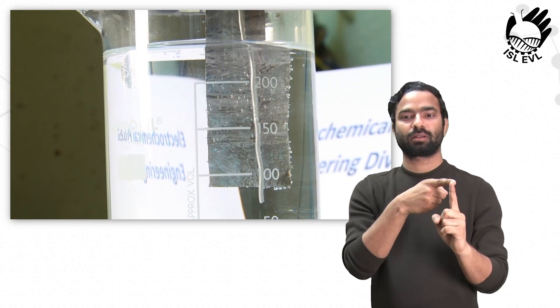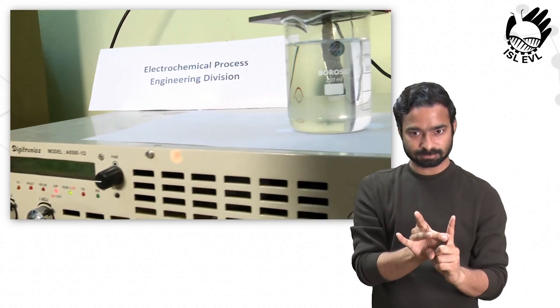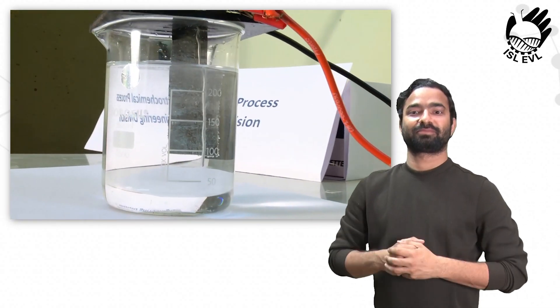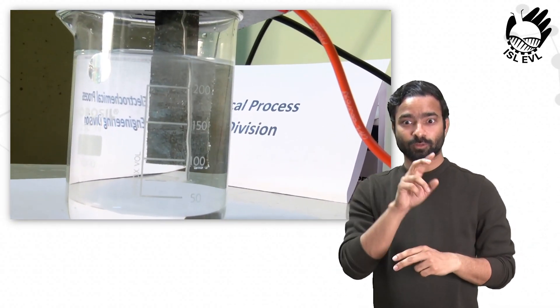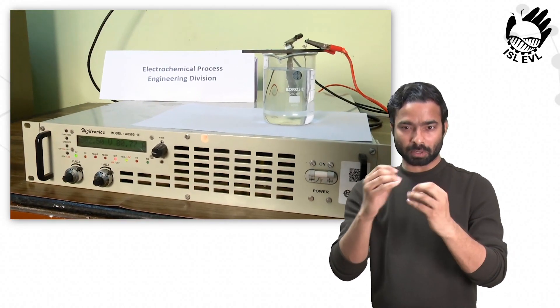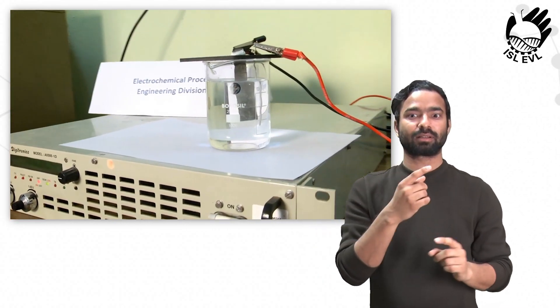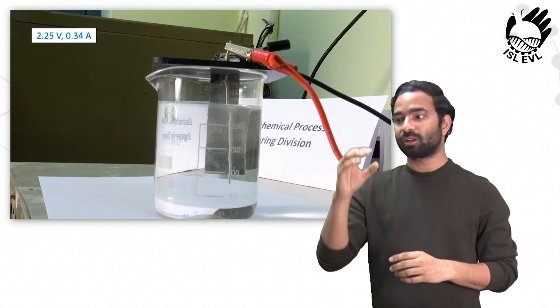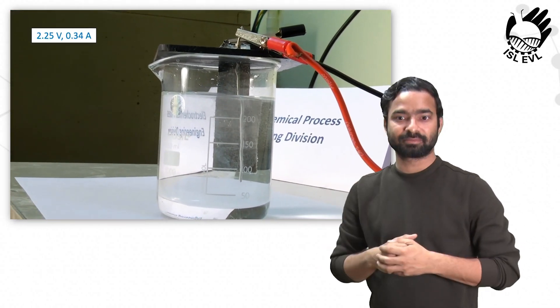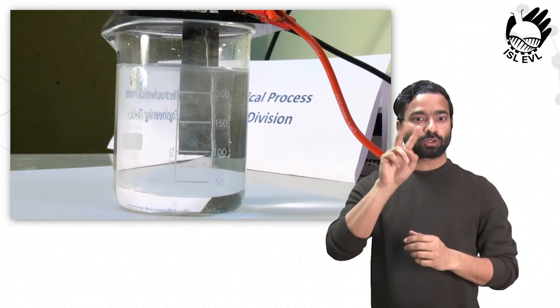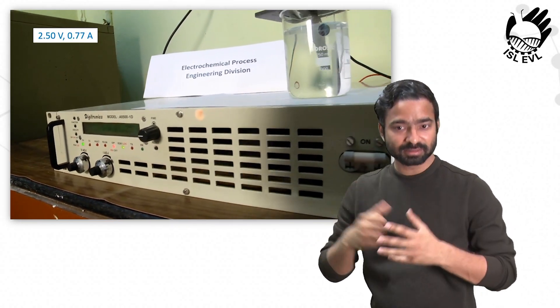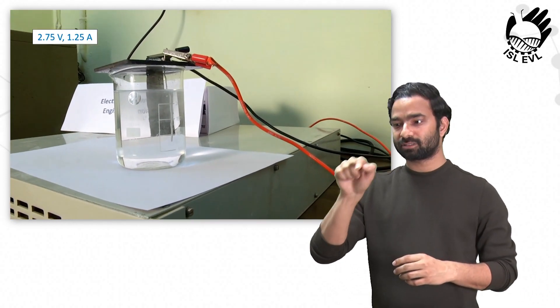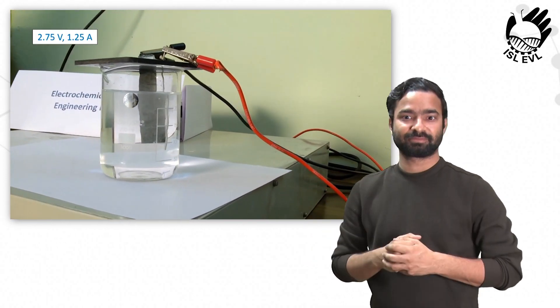As we vary the cell voltage from 2.25 to 3 volt, we can notice both increase in current and increase in evolution rate of hydrogen and oxygen gases. There is a progressive increase in current to 0.34 ampere when the cell voltage is adjusted to 2.25 volt. As we raise the cell voltage to 2.5 volt, the current is recorded as 0.77 ampere. When the cell voltage is raised to 2.75 volt, 1.25 ampere current is noted.